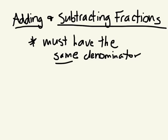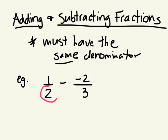Remember this? This is the problem. What's my denominator for the first one? Two. Good. And my denominator for the second fraction? Three. So I have to find the same denominator — I need to figure out what I can multiply each by to get the same answer.